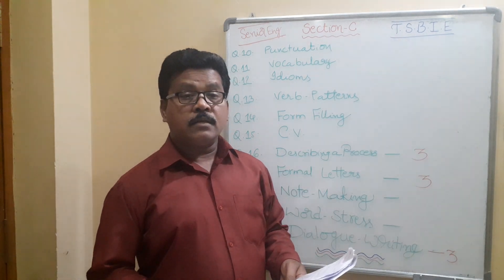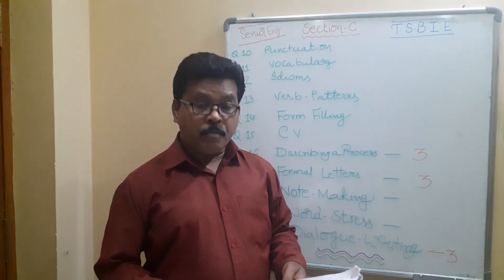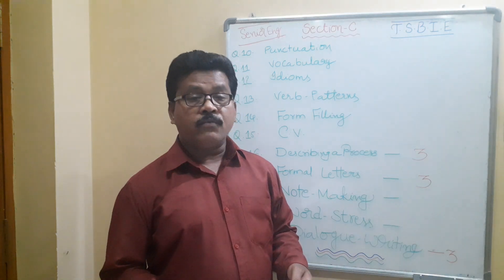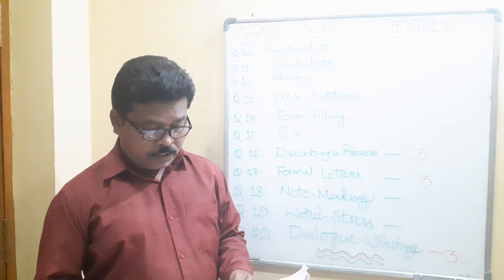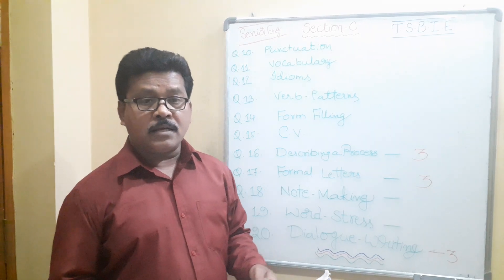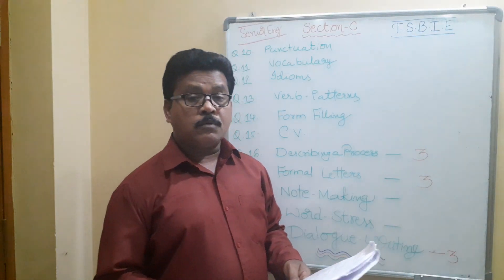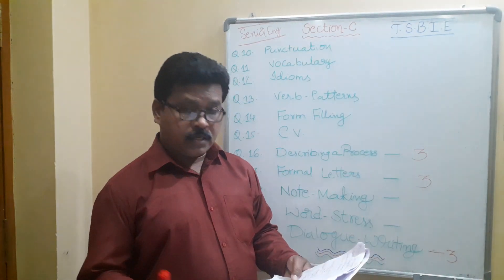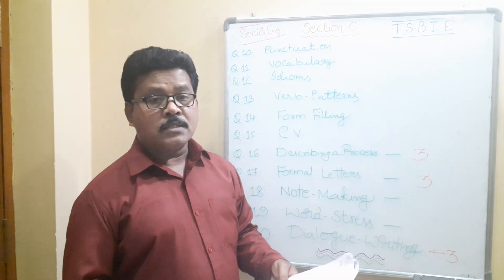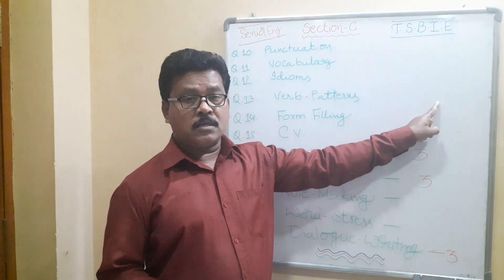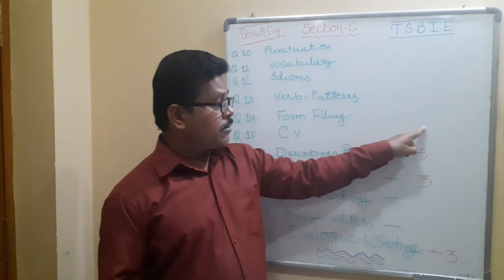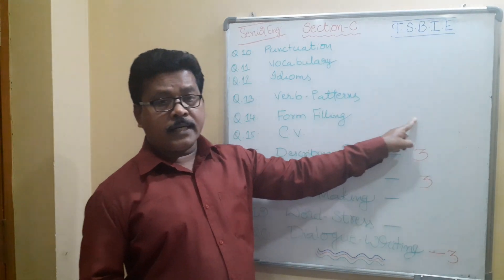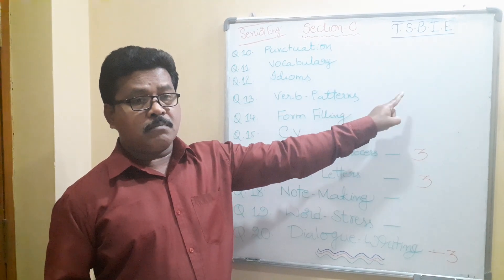Question number 14 is form filling — application forms. We have bank forms, railway forms, post office forms, and bus pass forms, but bank forms are very very important: credit form, debit form, demand draft, and banker's cheque. Refer to textbook pages 138 to 147. Do not draw the formats in the answer booklet — only write the question number and the answer. Some students draw the portal form in the answer booklet, which is incorrect.